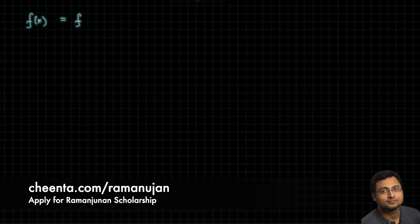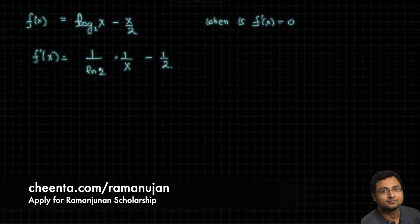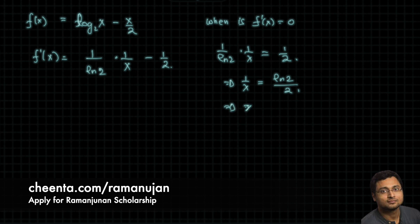Step two: let's take the derivative of f(x) = log base 2 of x minus x over 2. The first derivative is 1 over (ln 2 · x) minus one half. Now, when is the first derivative zero? It is zero when 1 over (ln 2 · x) equals one half, or 1 over x equals ln 2 over 2, which gives x equals 2 over ln 2.